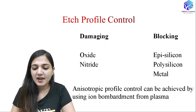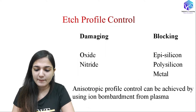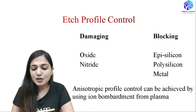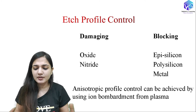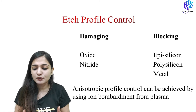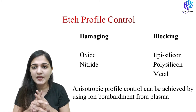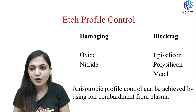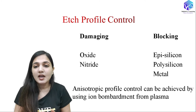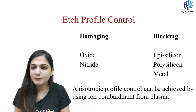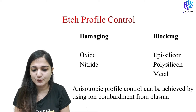Now, profile control. We can achieve profile control in the case of the damaging mechanism for oxide and nitride, and in the blocking mechanism for epitaxial silicon, polysilicon, and metal. Profile control can be achieved using ion bombardment, which can increase or decrease the etch rate and also control the anisotropic profile.